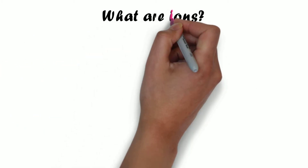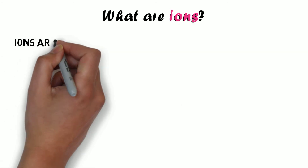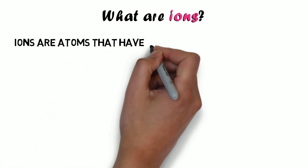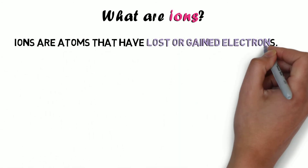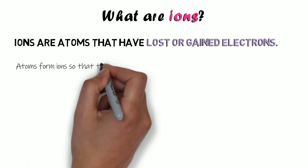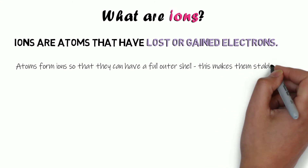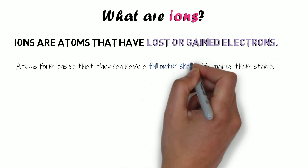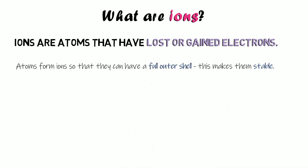Let's start by reminding ourselves: what is an ion and why do ions form? Ions are just atoms that have lost or gained some electrons — they might have lost some electrons, they might have gained some electrons. Either way, an ion will be formed. They do this so that they can get a full outer shell of electrons.